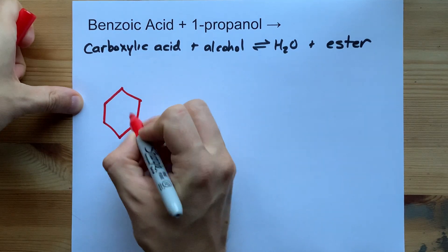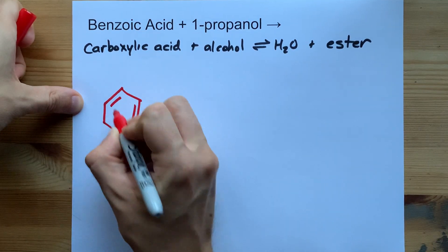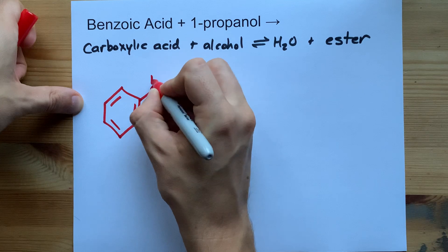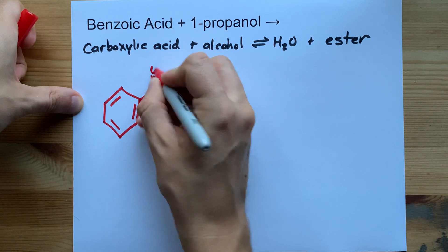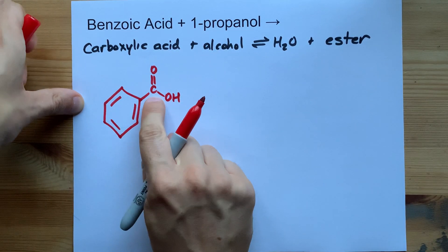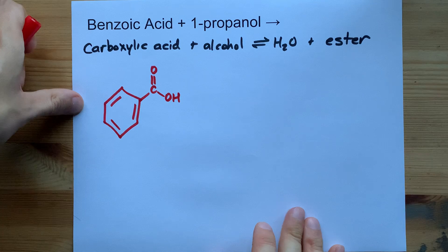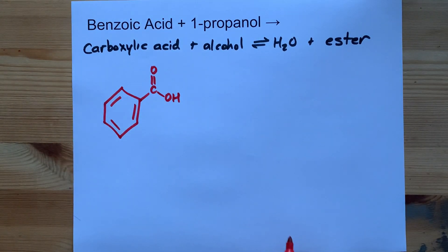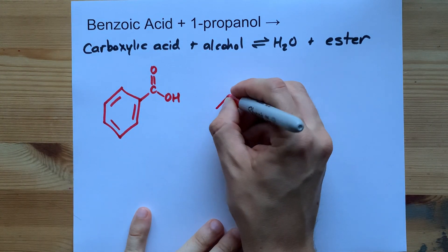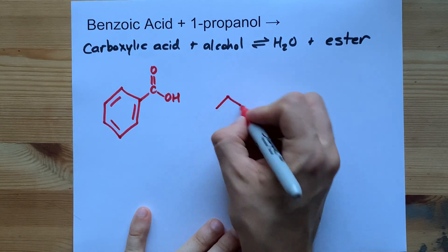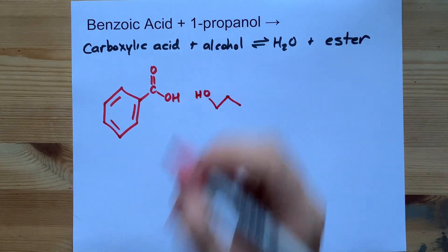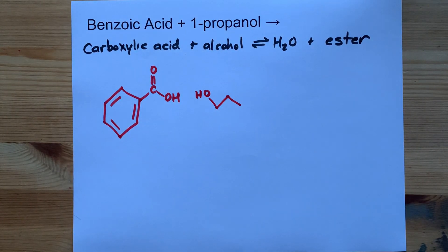Benzoic acid is a benzene ring that has an extra COOH attached to it. And the alcohol here is propanol — that's a three carbon chain that has an extra OH attached to it.